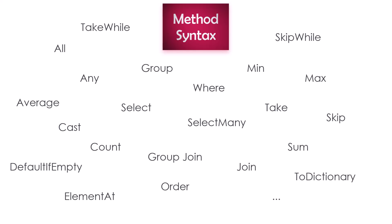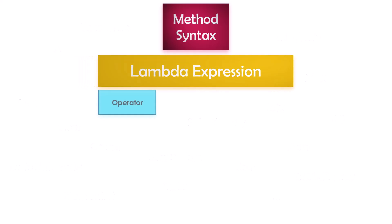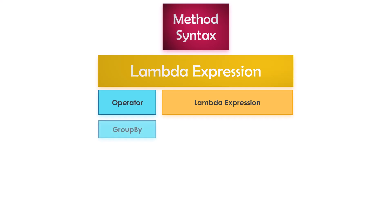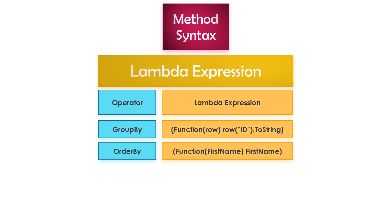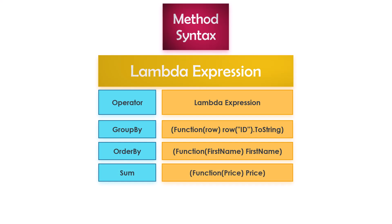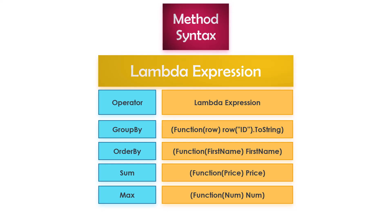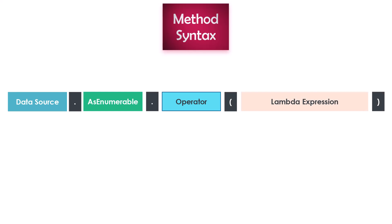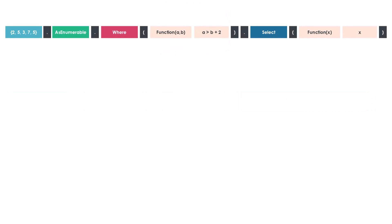Using method syntax we can use all LINQ operators — every operator can be used in method syntax with a lambda expression. For example, group operator, order operator, sum operator, max operator, and so on. Some operators have more than one parameter in their lambda expression. For example, the where operator also has a structure with two variables, a and b, where a represents elements of the data source and b represents the index of the elements.